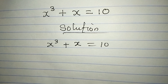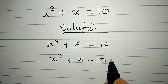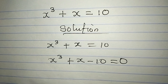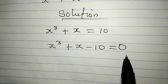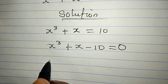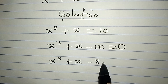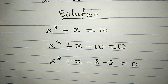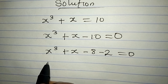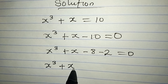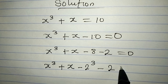So how do we deal with this? x³ + x − 10 = 0. What I did is bring everything to the left so that 0 will be on the right. Now we have x³ + x, then minus 8 minus 2 equals 0. Remember, minus 8 minus 2 gives us minus 10. Because x³ + x − 8 is 2 to the power of 3, then minus 2, equals 0.